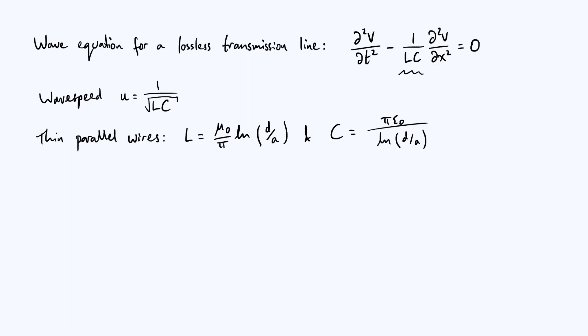Now you can already maybe spot something that's going to happen which is interesting when we multiply L and C together because you've got this log term here and you've got the same log term on the denominator of your capacitance. So if you do L times C the logs will cancel out, the π's will also cancel out, and you will just get μ₀ε₀ which is interestingly independent of the specific parameters of your transmission line.